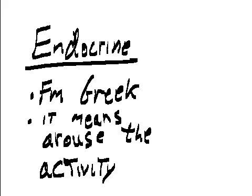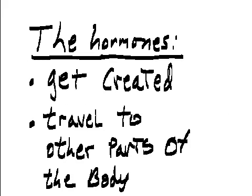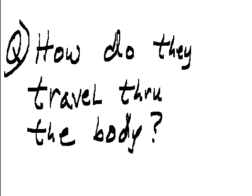Endocrine — it comes from Greek, it means 'arouse the activity.' It is a hormone manufacturing and distribution system. The hormones get created, they travel to other parts of the body, and arouse an activity associated with some organ.